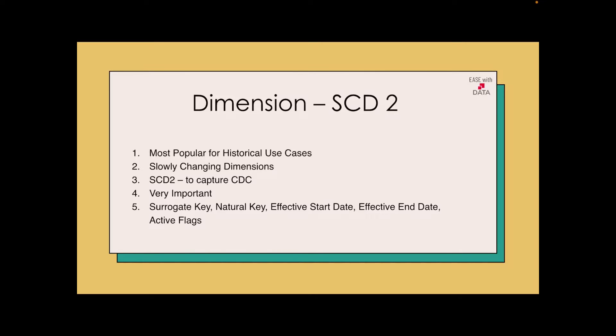Today we are going to talk about slowly changing dimension type 2, also known as SCD. It maintains all the historical records along with the current record. It is useful for change data capture, also known as CDC. This table is never done as a truncate load. It is always loaded as a part of incremental loads. The table size usually increases along with time because we are maintaining history records in it.